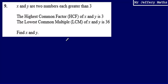Welcome to question 9 in a series of videos taking a look at the Edexcel practice papers. Here we're told that x and y are two numbers each greater than 3. We're told that the highest common factor of x and y is 3, and the lowest common multiple of x and y is 36. We're asked to find x and y.